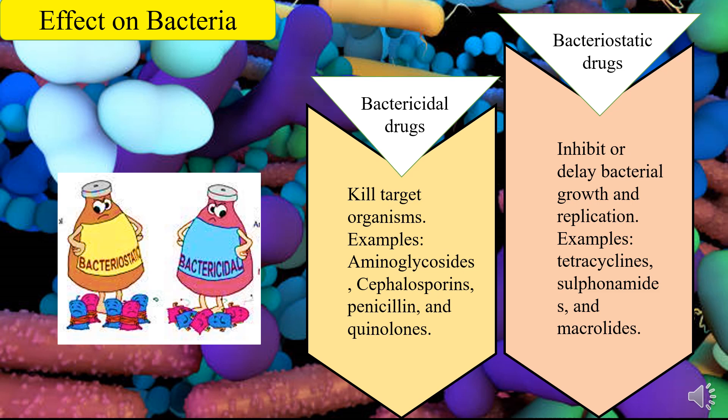Depending on the effect on bacteria, there are two types of antibiotics: bactericidal drugs and bacteriostatic drugs. Antibacterials which destroy bacteria by targeting the cell wall or cell membrane are termed bactericidal, while those that slow or inhibit the growth of bacteria are referred to as bacteriostatic. The inhibition by bacteriostatic agents involves inhibition of protein synthesis or some bacterial metabolic pathways. Sometimes it is difficult to mark a clear boundary between bacteriostatic and bactericidal, especially when high concentrations of some bacteriostatic agents are used, as they may then work as bactericidal.